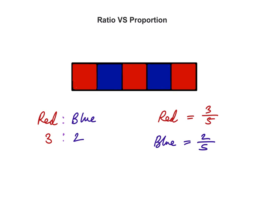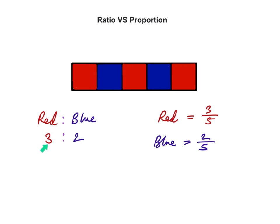A proportion is out of the total — there are five squares in total. The proportion of red is the quantity of the red category, which is three, out of the total number of squares. The proportion of blue squares is two out of the total number of squares. Whereas in a ratio, we are just showing the quantity of one category — red — to another category — blue — showing the quantitative relationship between the red squares and the blue squares.